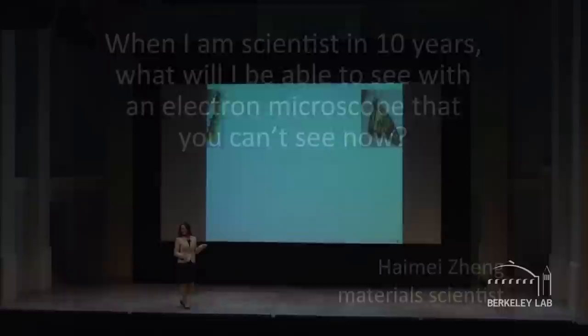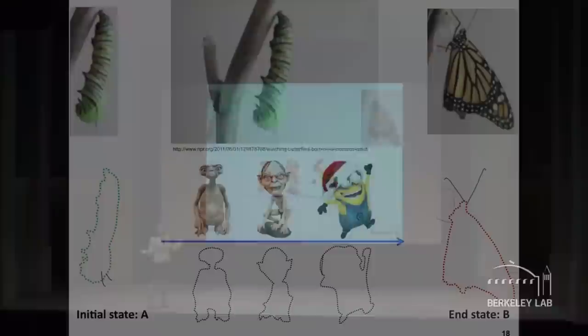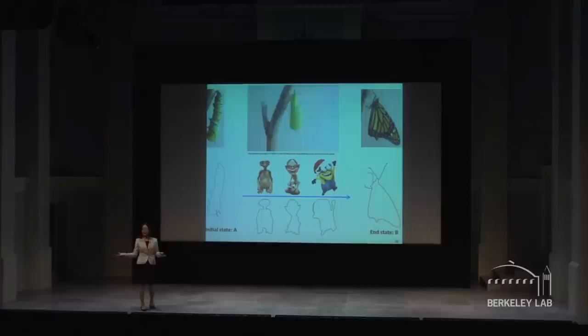In nature, how does the caterpillar transform to a butterfly? We can make a guess based on the initial state and the end state. Our speculation can be terribly wrong. However, if we watch the dynamic processes directly, there is no ambiguity.